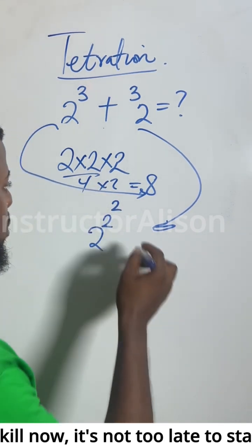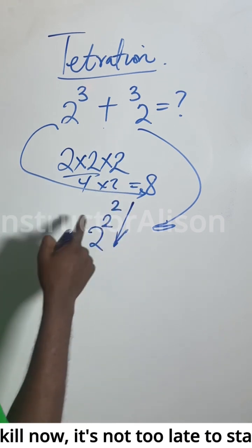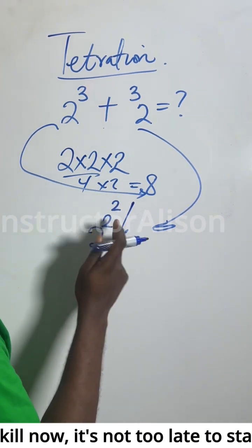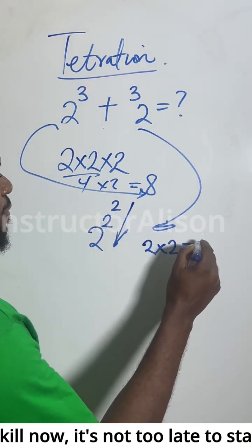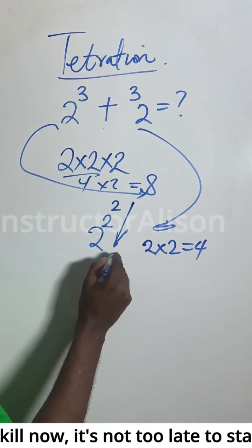So how do we resolve this? You're going to be following from up down. What I mean is that you have to take this one first. 2 multiplied by 2, that gives you 4. That means you have 2 to the power of 4.